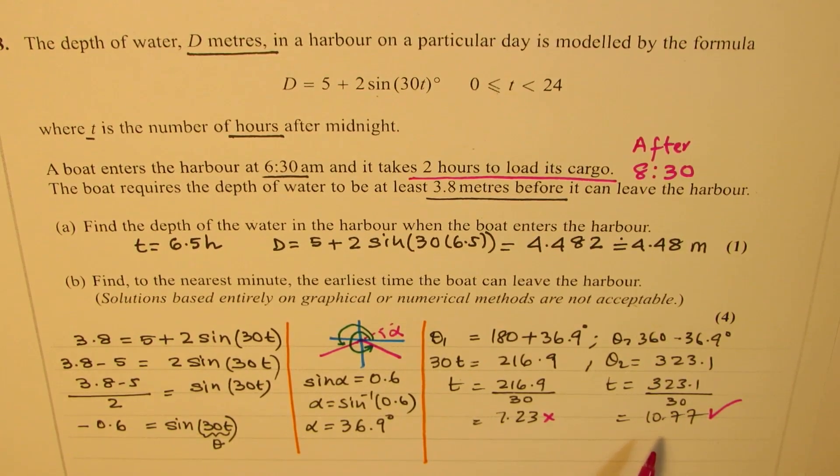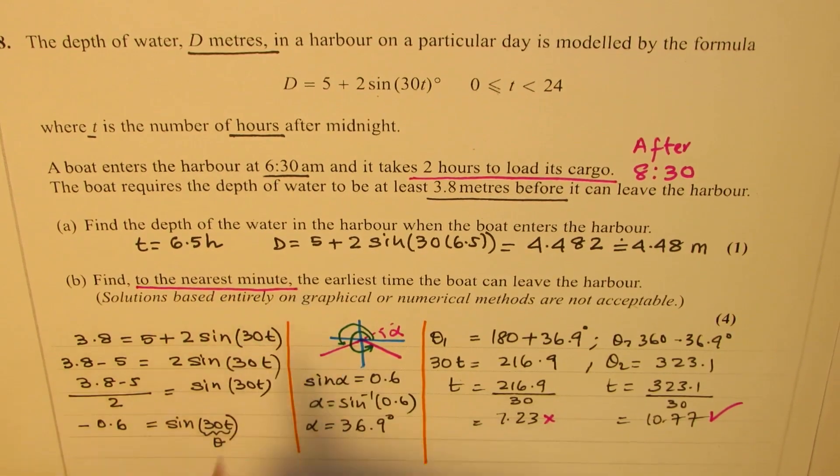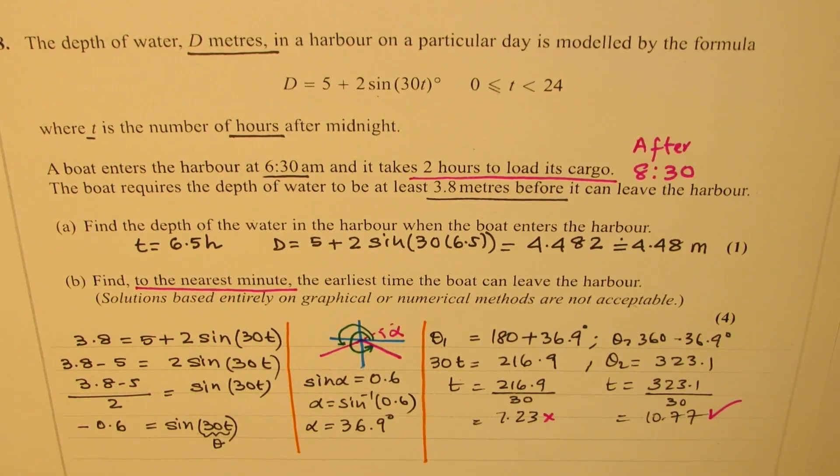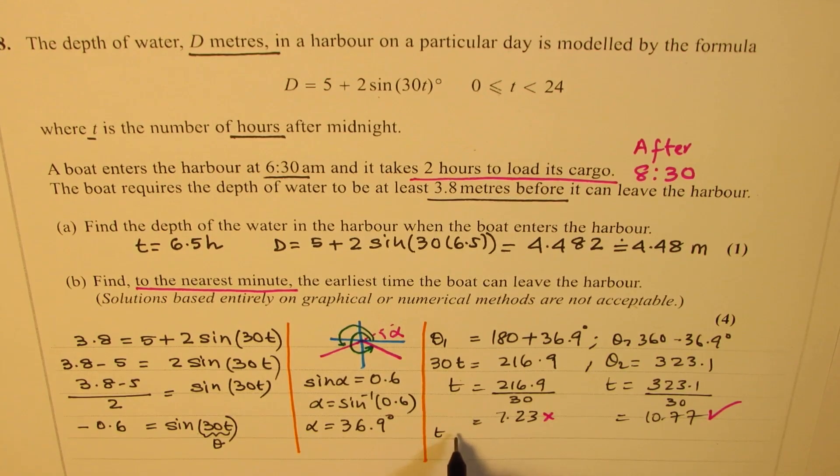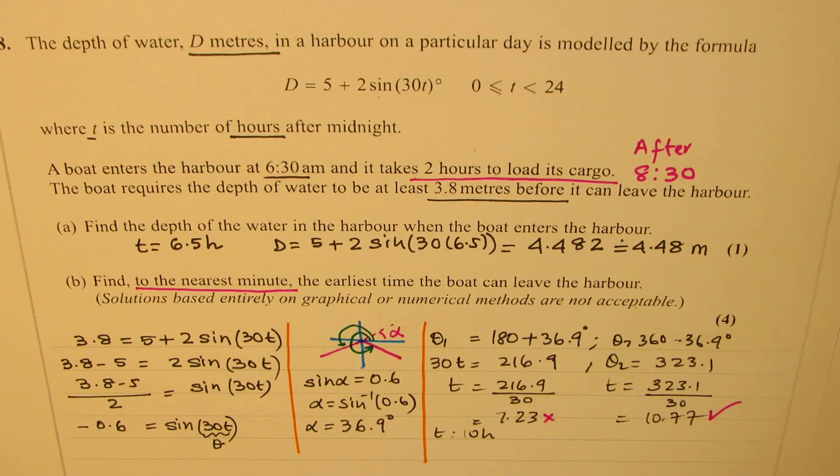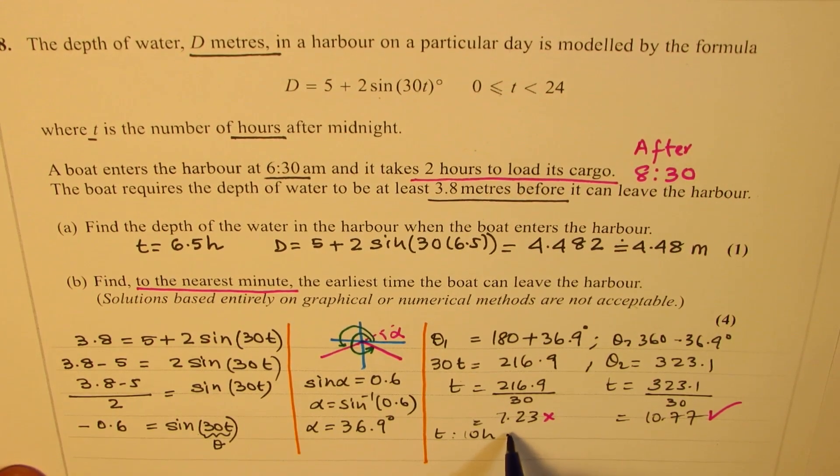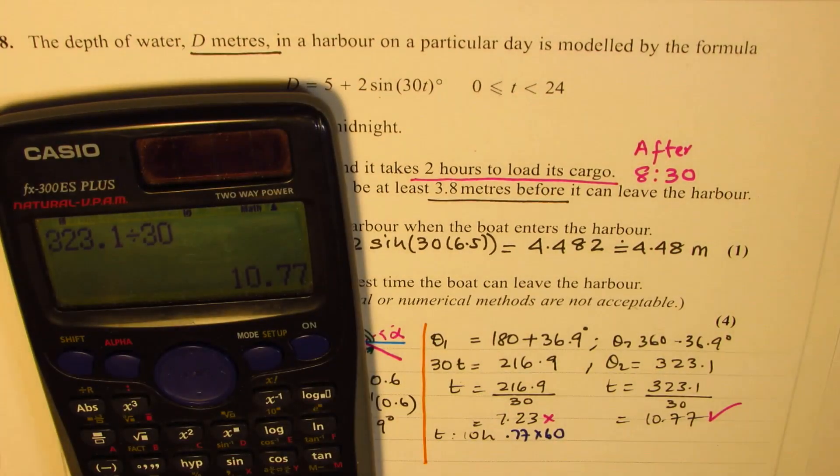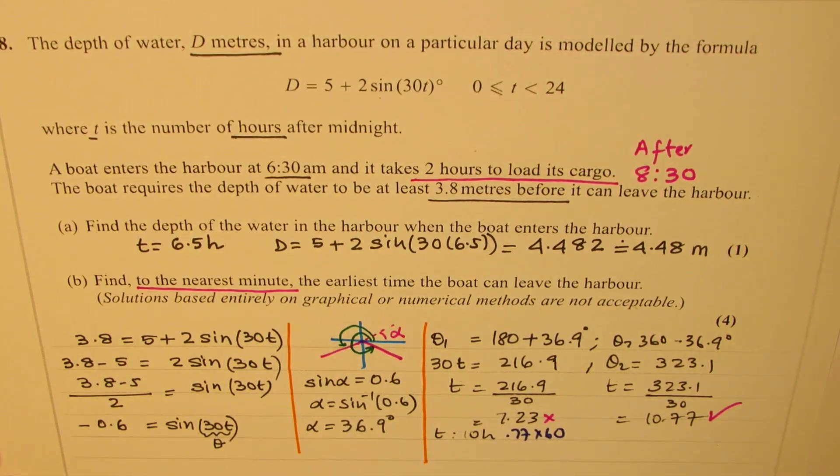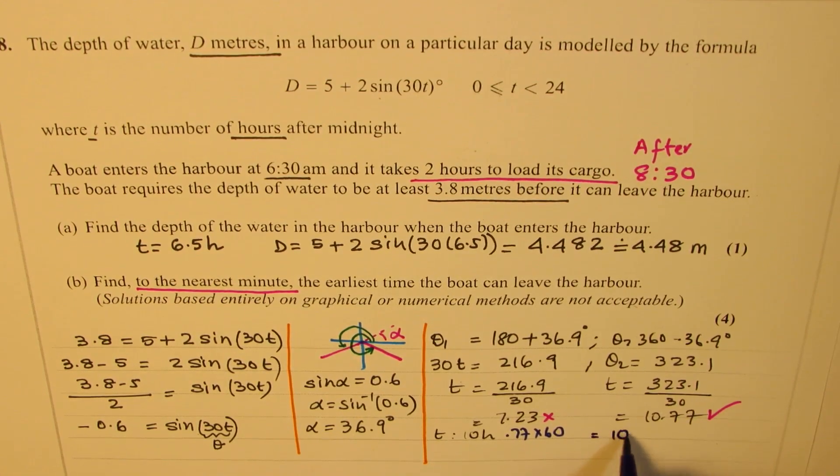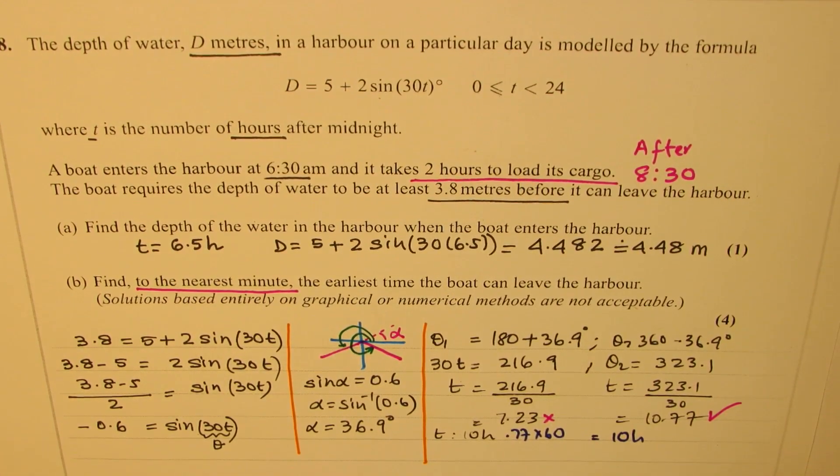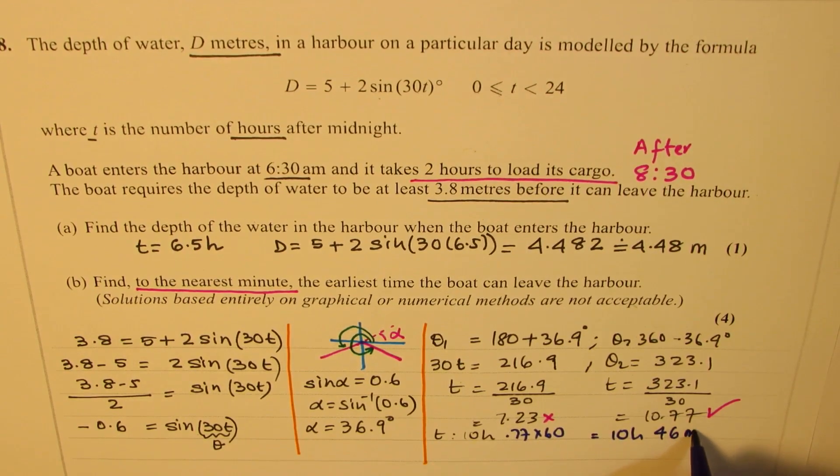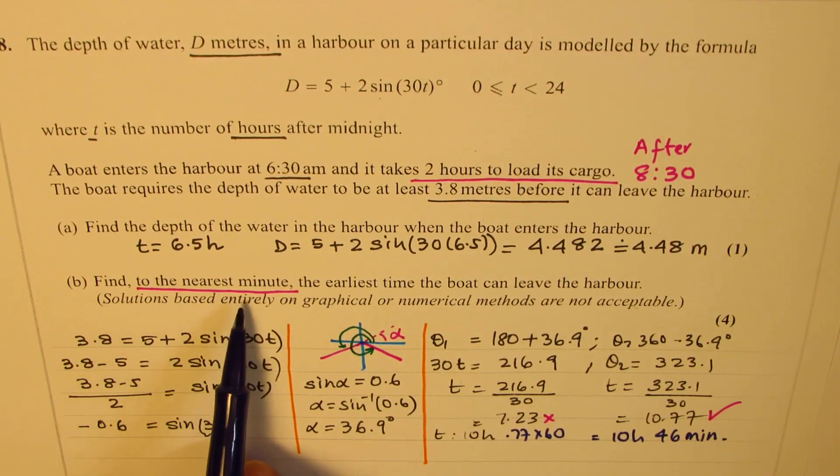Now we need to provide the answer to the nearest minute. These are very important things to consider while you are answering. So we say time should be 10 hours and how many minutes? Let's convert 0.77 times 60. 0.77 times 60 gives us 46 minutes. So which basically is 10 hours and 46 minutes.